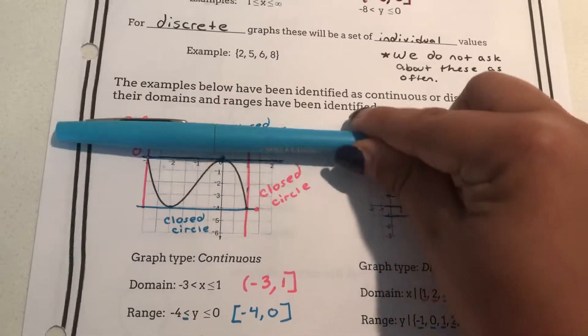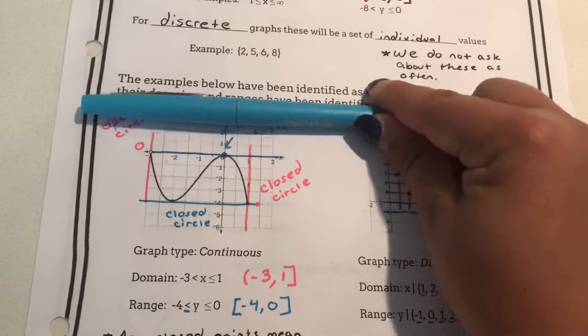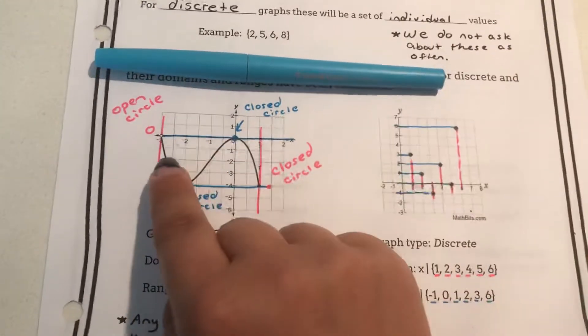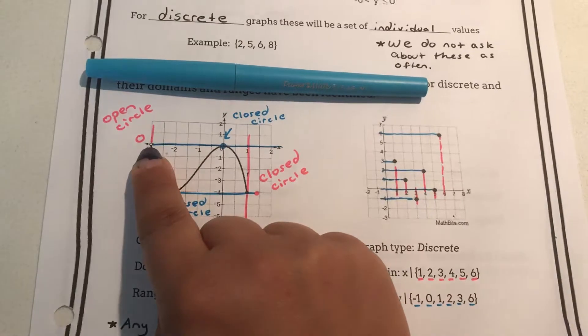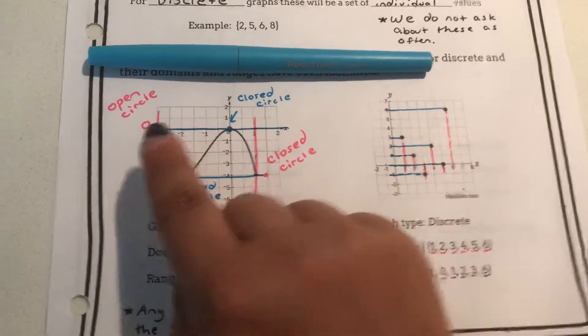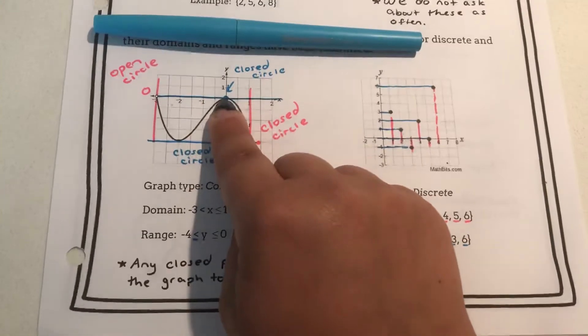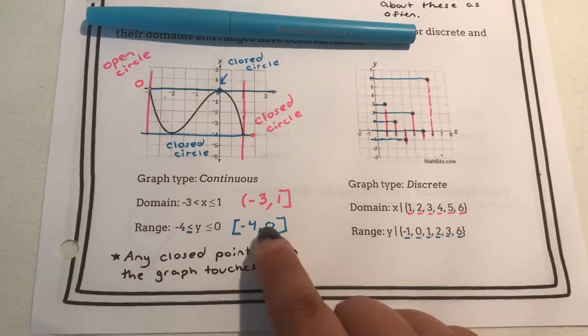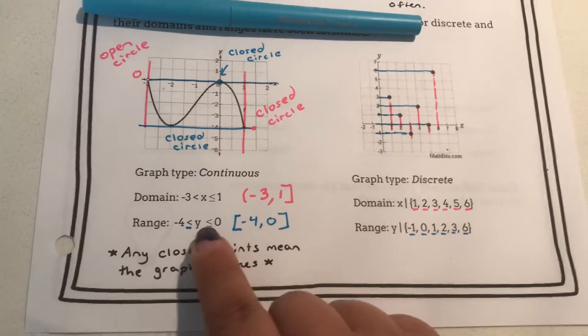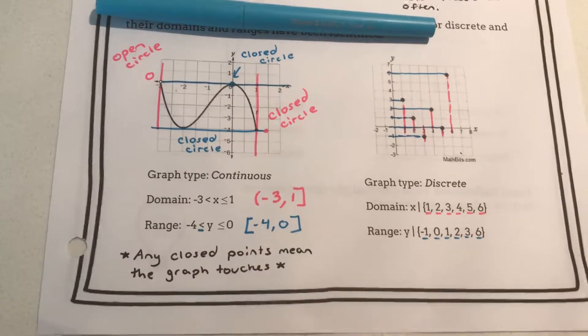As I continue it up it ends at y equals zero. Even though there is an open circle here there's a closed circle where that graph touches. Which means that at some point we have confirmedly touched zero. Therefore we are equal to zero.